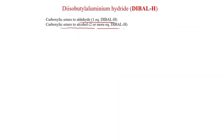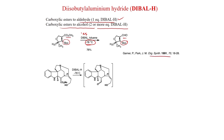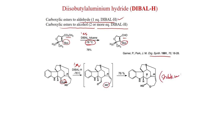Carboxylic ester to aldehyde uses 1 equivalent of DIBAL-H; carboxylic ester to alcohol uses 2 or more equivalents. With 1 equivalent DIBAL-H at −78 °C in toluene, an ester is converted to the aldehyde and other blocking groups are untouched — reported in Organic Synthesis. Also, in an alkaloid example with an ester group, 1 equivalent DIBAL-H at −78 °C generates an aldehyde in situ, which reacts with a primary alcohol to generate a lactol. This lactol is stable under DIBAL-H conditions and does not react further.